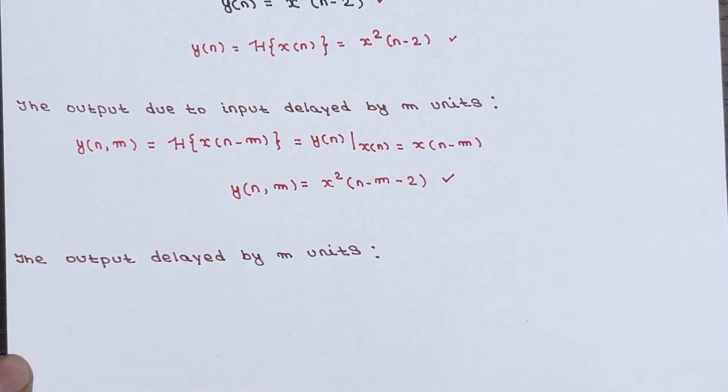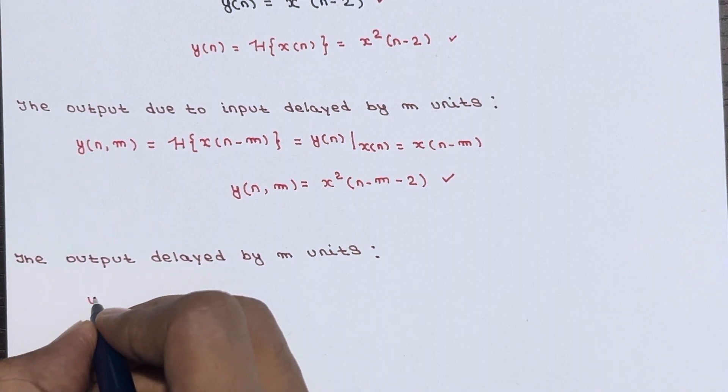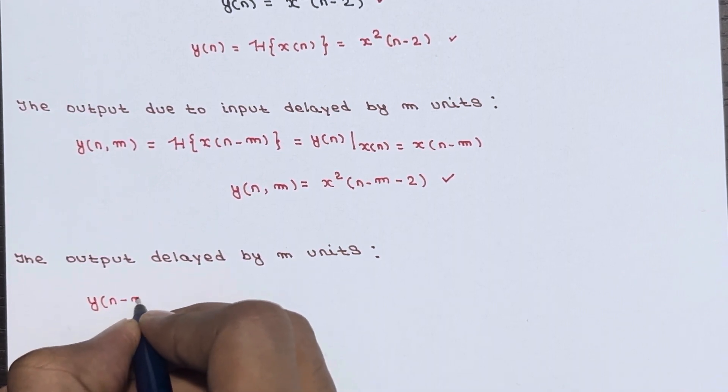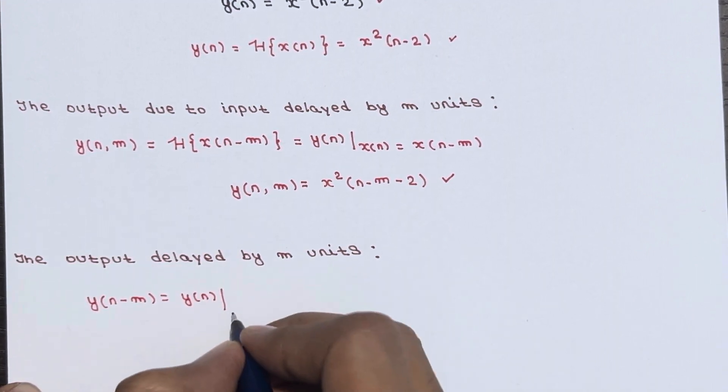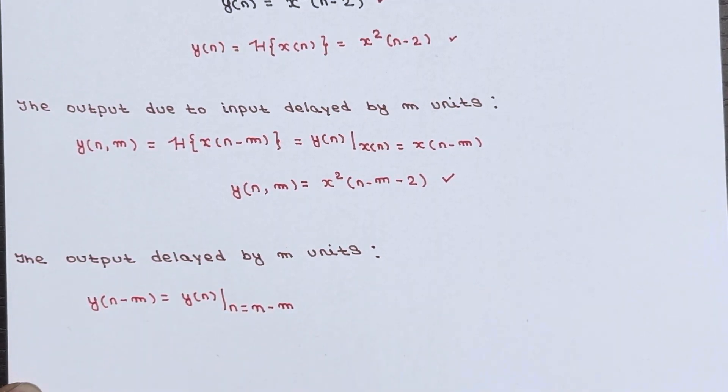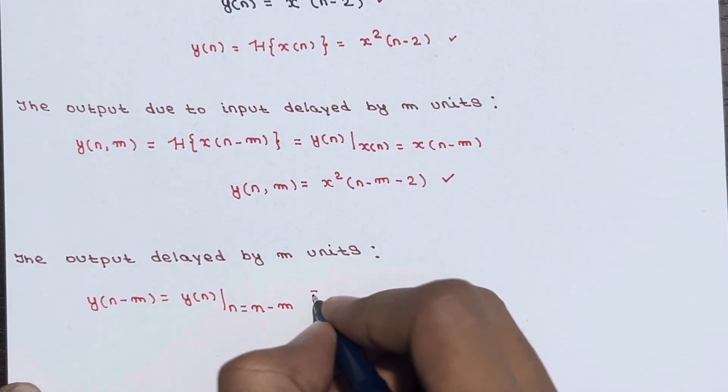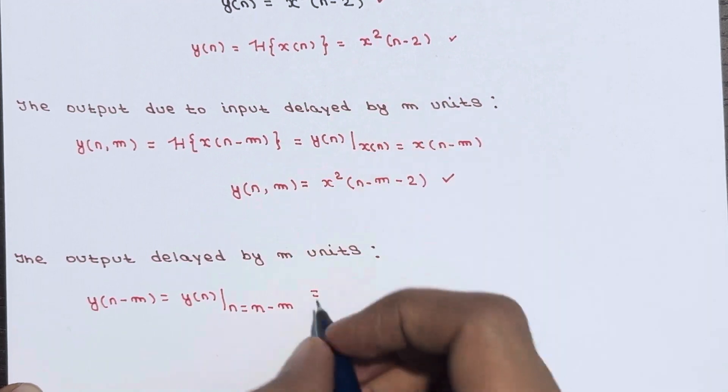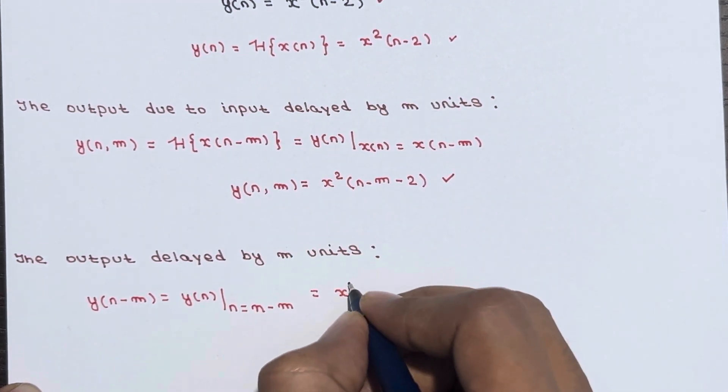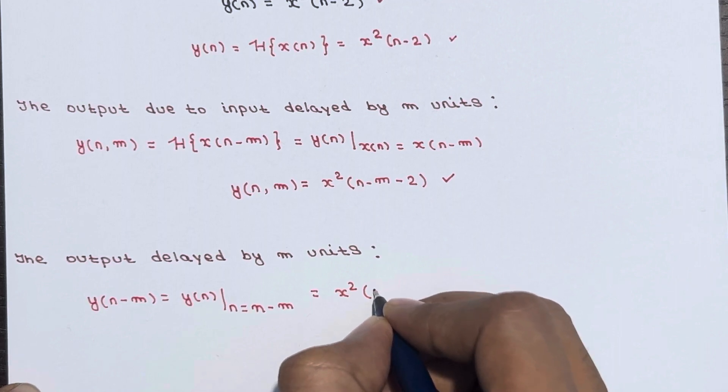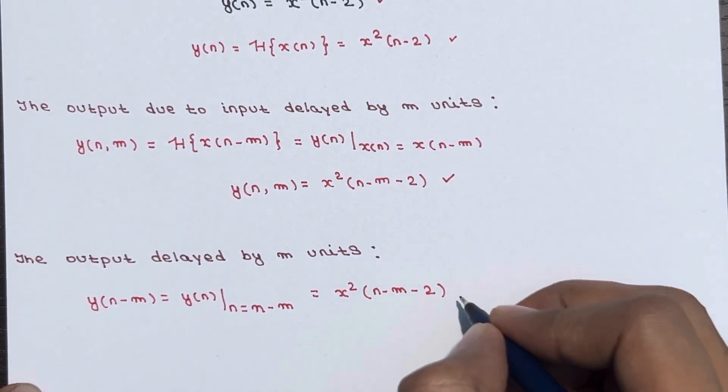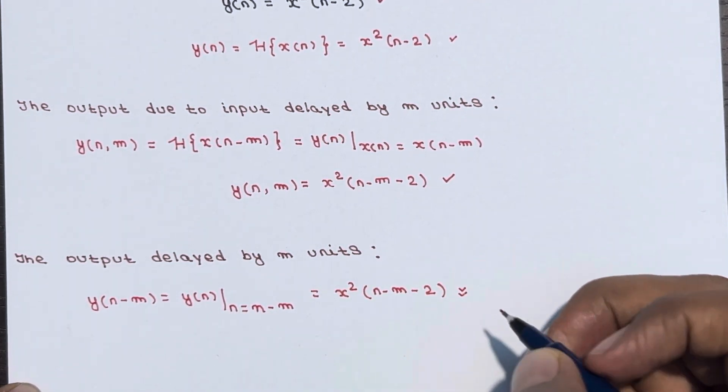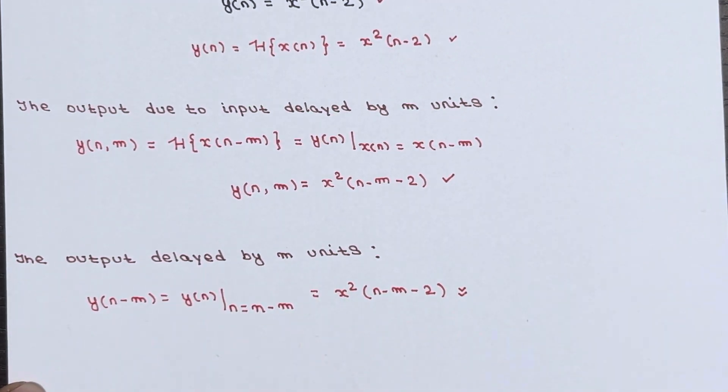Now we have to calculate the output delayed by m units. Means we have to calculate y(n-m) which is equal to y(n) when n is equal to n-m. So wherever n is present, just replace with n-m. So in this equation, it will become x²(n-m-2). So from here, you have calculated the output delayed by m units also.